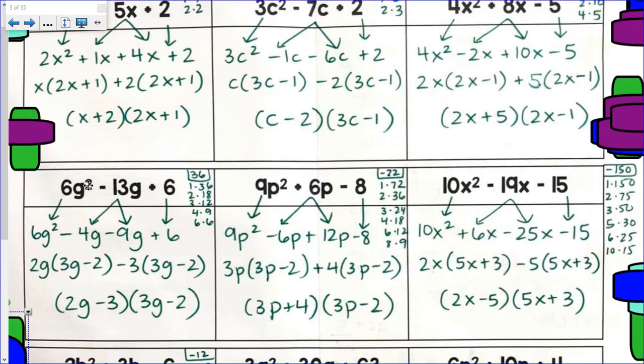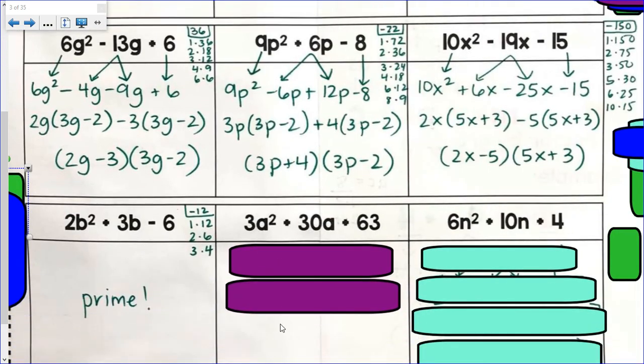Because 3, 7, and 2, no GCF. 4, 8, and negative 5, no GCF. And the same thing for these. But again, notice all the factored form is pretty clean. There's nothing I would have factored out going further. But here, 3 is the GCF of these three terms.